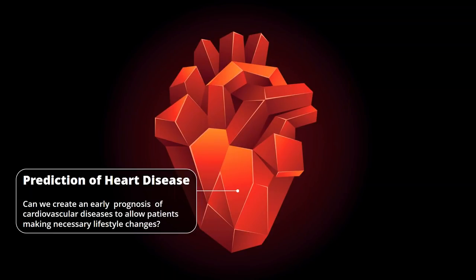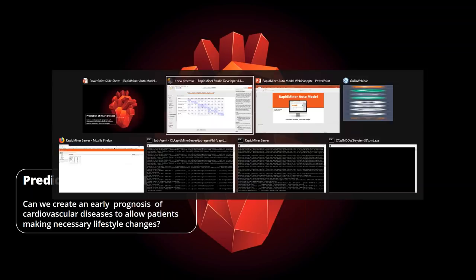The next use case is about prediction of heart diseases. I was a bit shocked recently when I looked into what is the number one cause of death in North America — it turned out to be cardiovascular diseases. This is actually the number one reason people die, even more than cancer. Alone in the United States, almost 30 million people are diagnosed with heart disease — roughly 10 to 12% of the whole population. So this is an important topic. I have no medical background whatsoever, but that's exactly the exciting thing — let's run this through the AutoModel and see what we can learn.